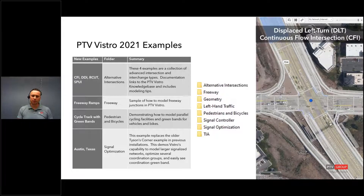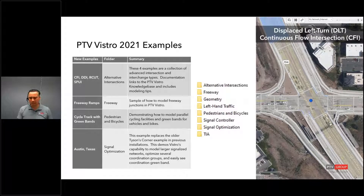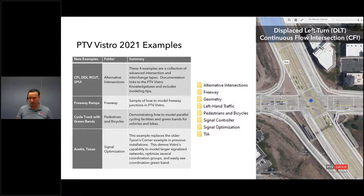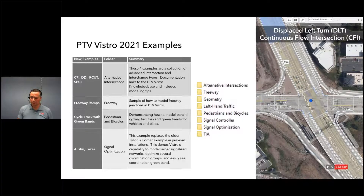This city grid model replaced the Tyson's Corner model, which was really outdated. So we put in Austin, Texas instead. The Atlanta model and the Chapel Hill models have been modified to reflect the geometry changes and updates made in Vistro 2021. They look really good, and the micro simulation in these models looks pretty good as well.